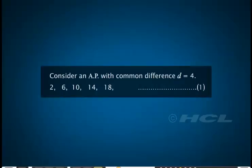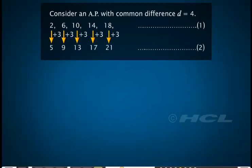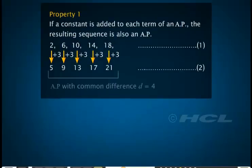Look at this AP — it has the common difference d equals 4. Label this AP as 1. Now add 3 to each term of AP 1; we get a sequence denoted by 2 as shown. Note that the resulting sequence 2 is an AP with a common difference 4. We can see that if a constant is added to each term of an AP, the resulting sequence is also an AP.